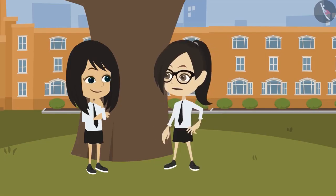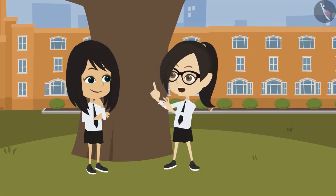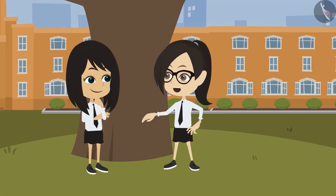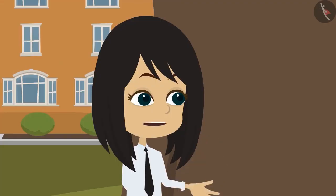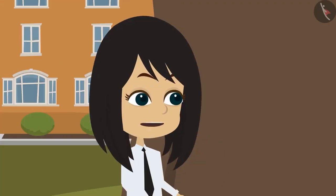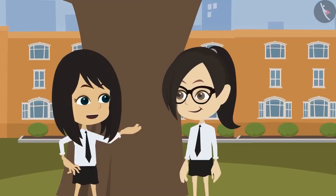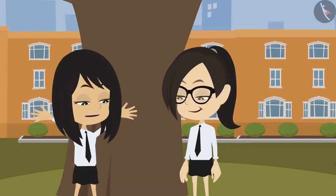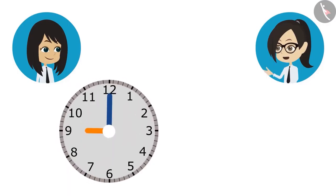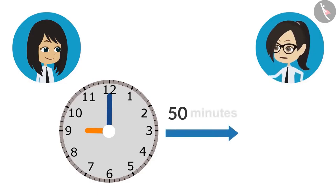Now let us find out the class which is for 50 minutes. At what time will it finish if it starts at 9 o'clock in the morning? In this, the start time of the class and how much time it will take to end is known, and we have to find out what time will the class end. I have drawn the start time of the class in this clock, and we have to find out what will be the time after 50 minutes.